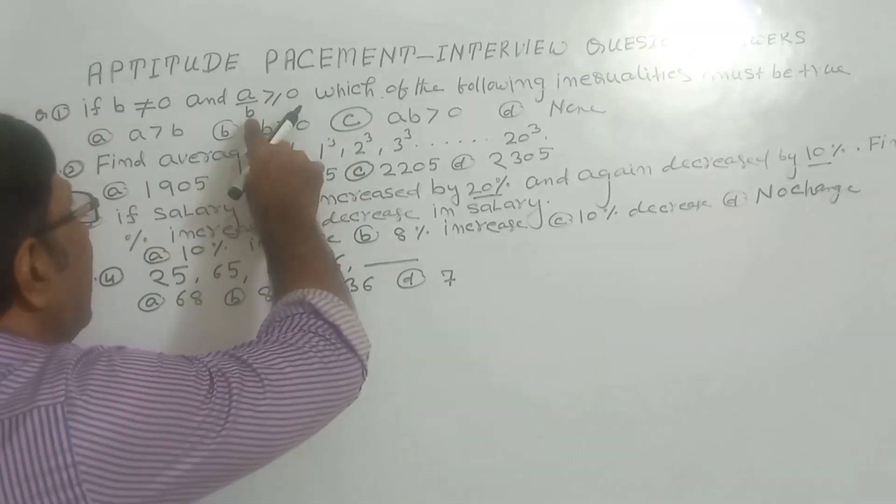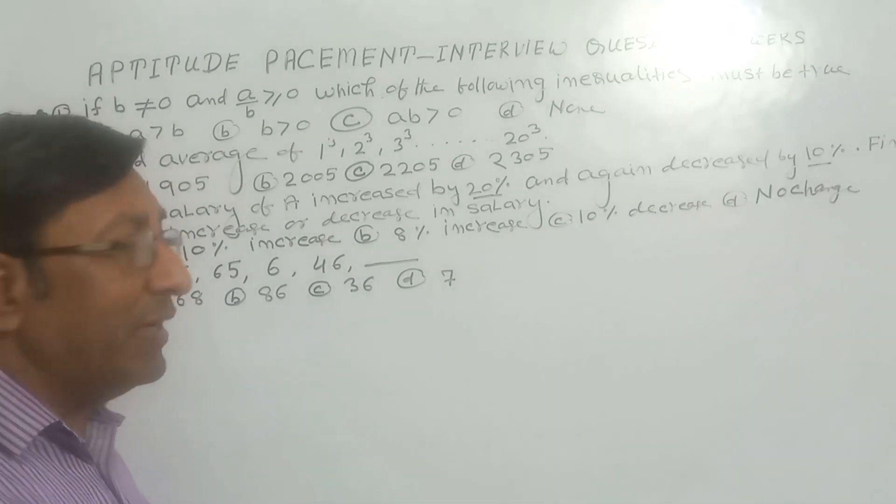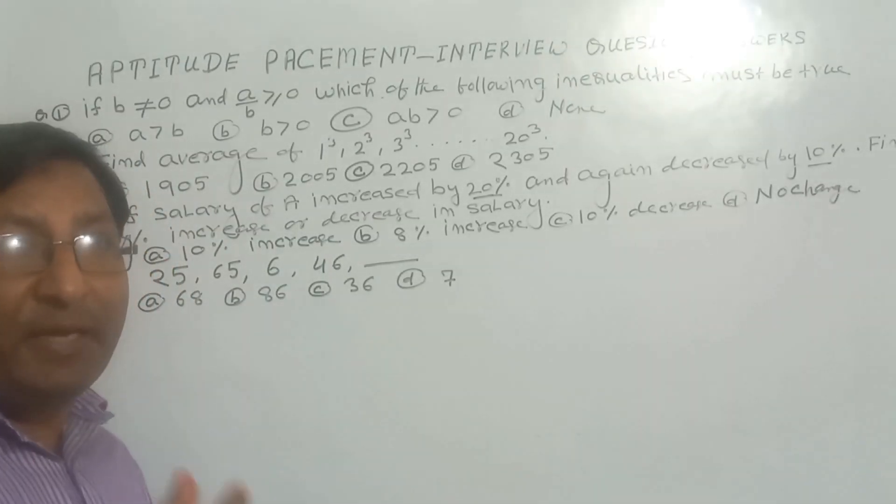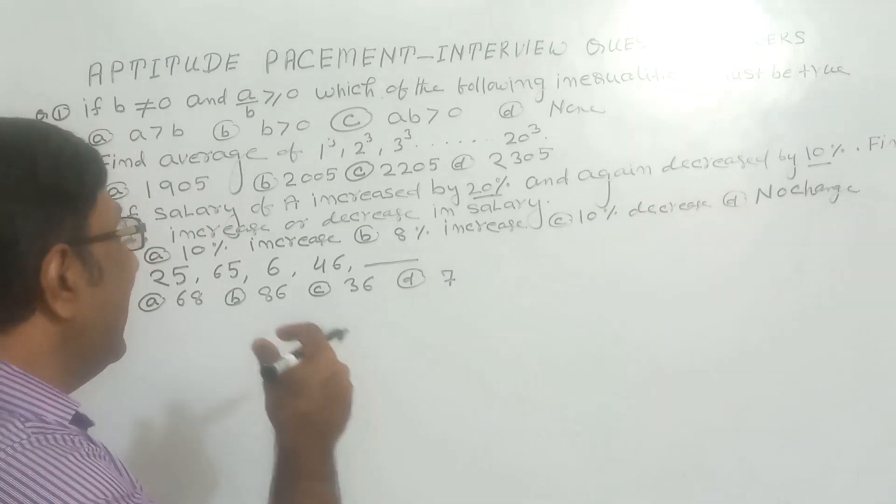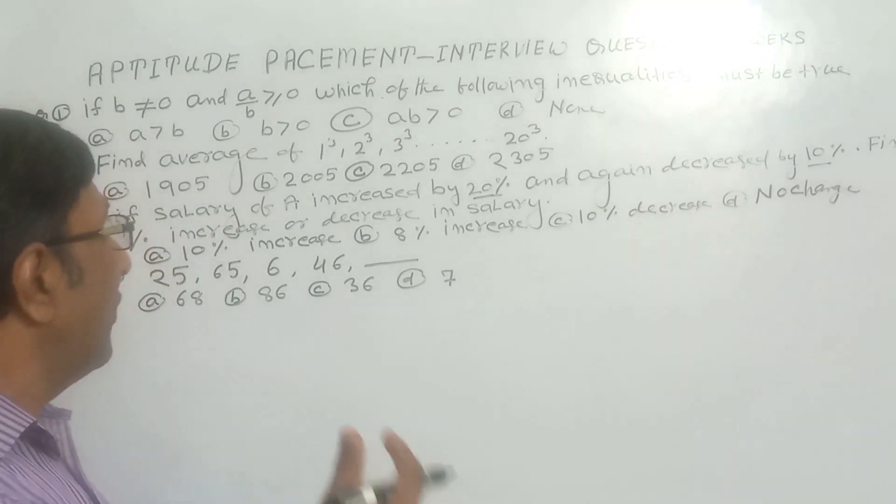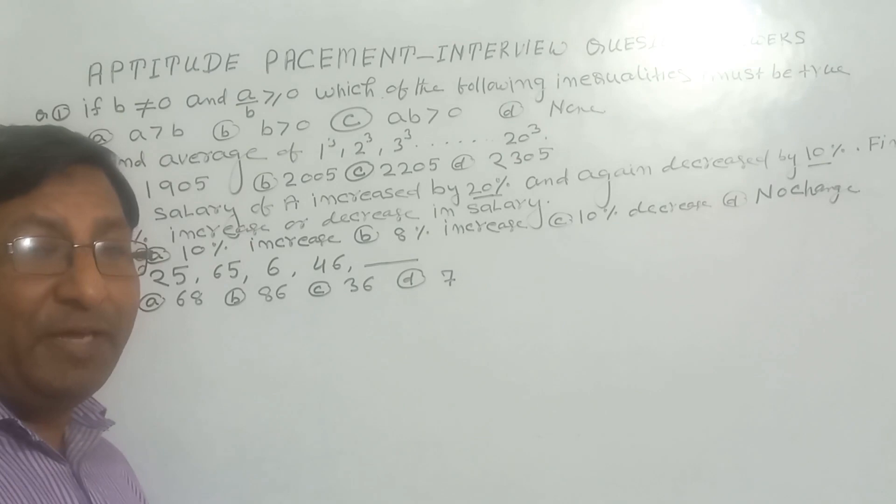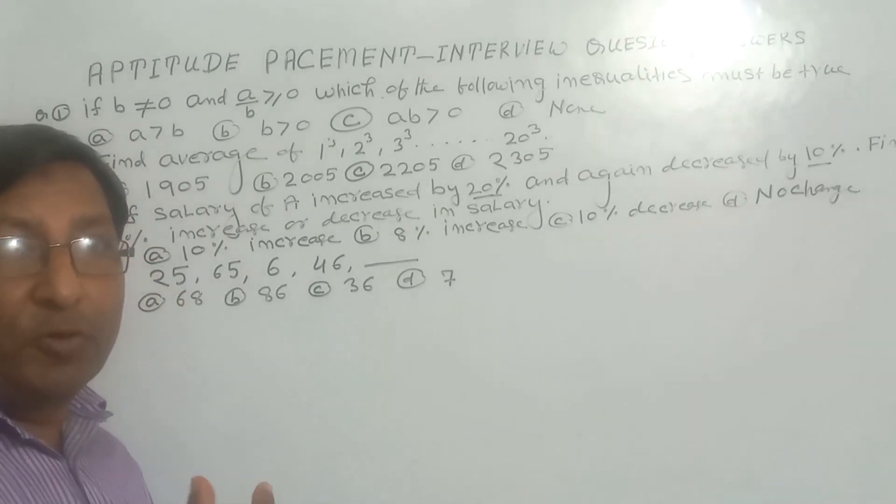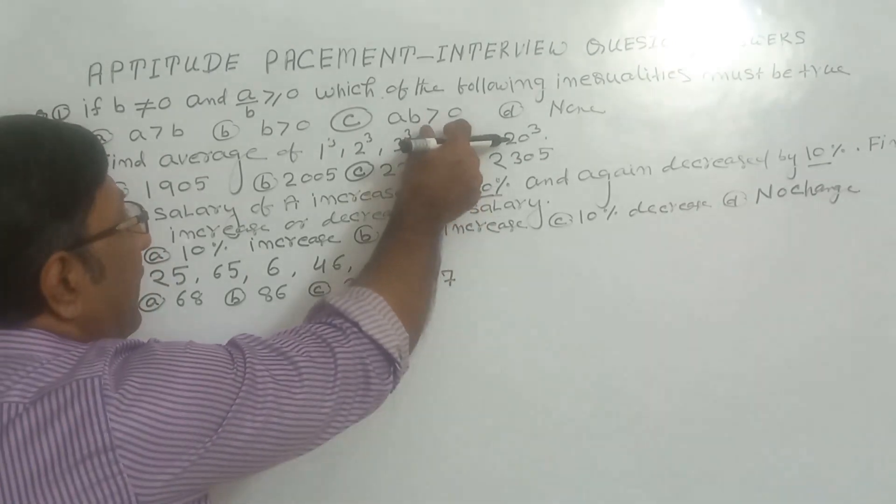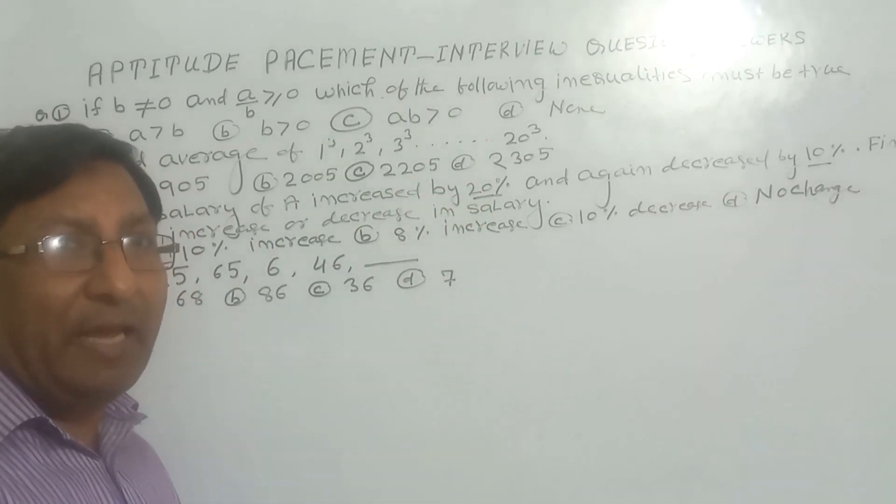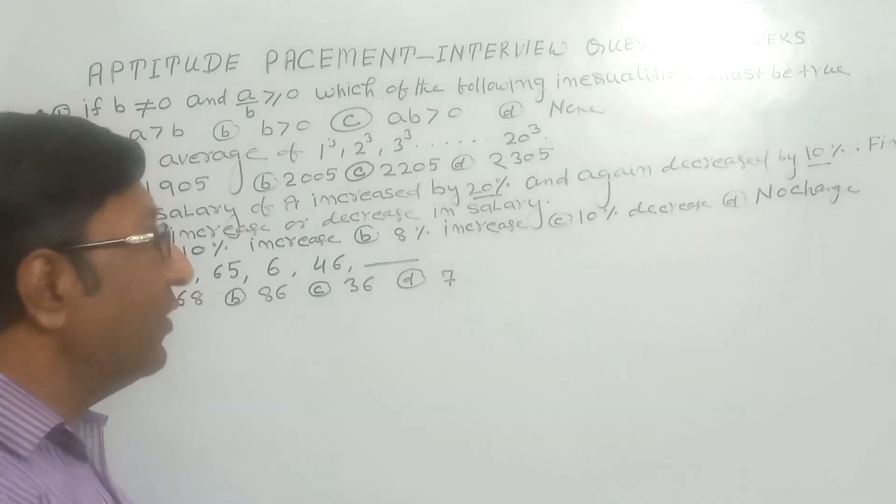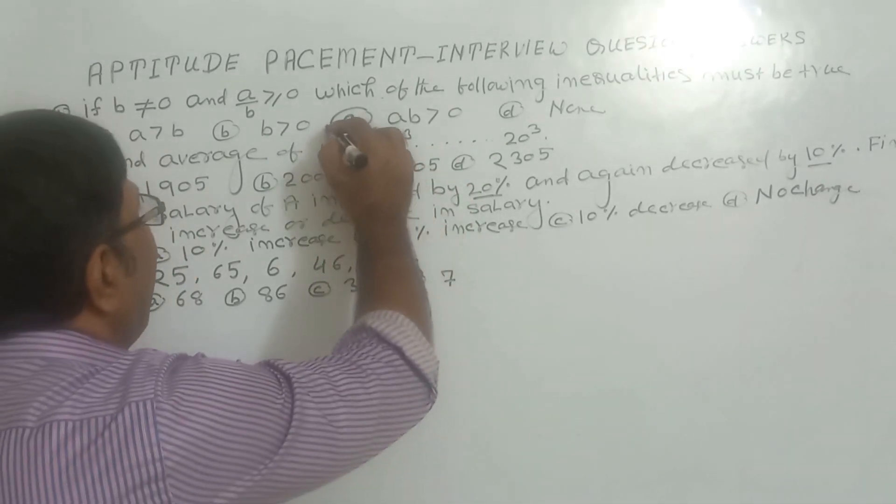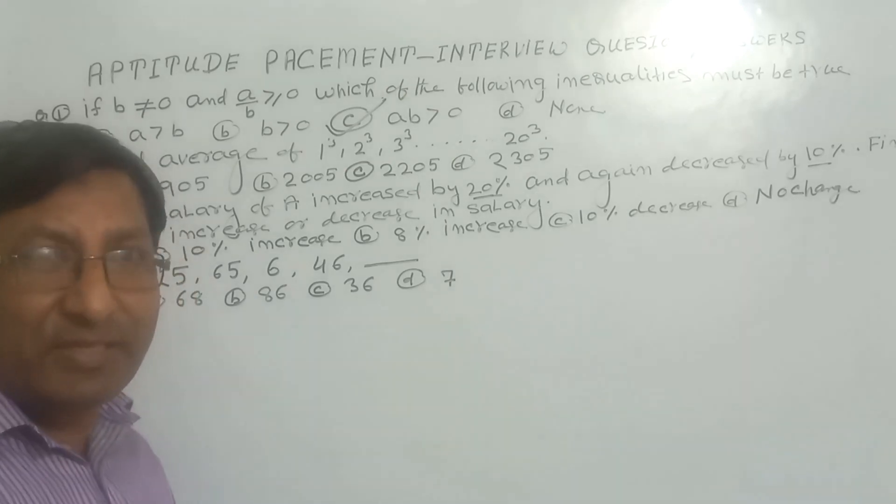That means A and B must have same sign. If A and B both positive, then A by B ratio will be greater than 0, and if A and B both negative, then also A upon B will be greater than or equal to 0. So if A and B both positive, the product will be greater than 0, and A and B both negative, then also product will be greater than 0. So our correct answer is C.